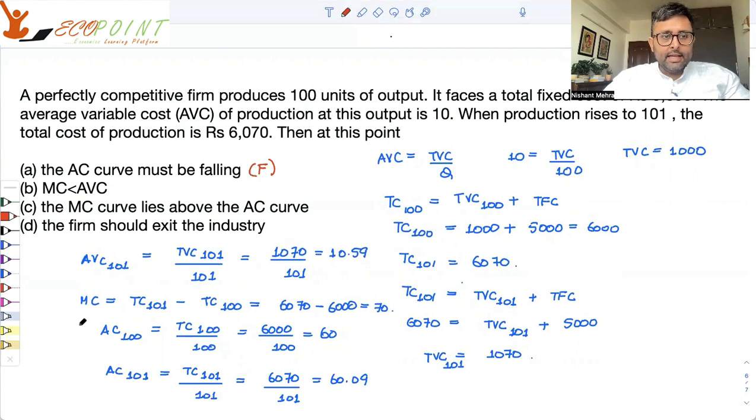MC is less than AVC. Is that true? What is AVC? AVC is 10. AVC is 10.59. MC is 70. How is MC less than AVC? This is false.